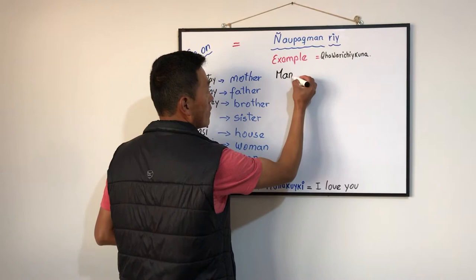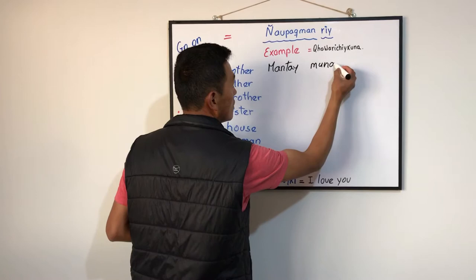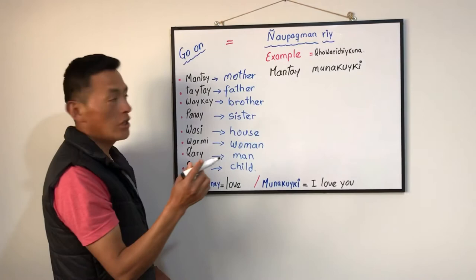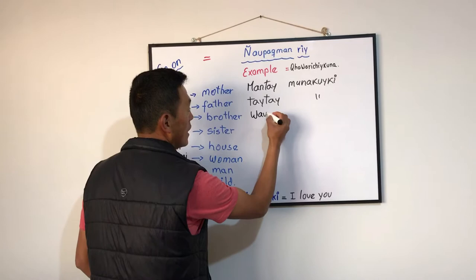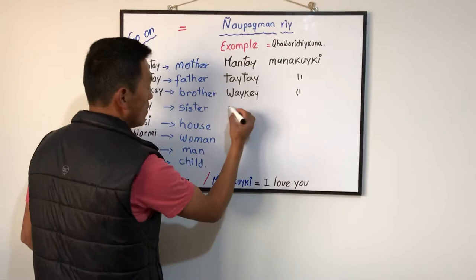We have to say Mantai Munacuiki. Taitai Munacuiki. Brother — in Quechua, Waitei. Waitei Munacuiki.